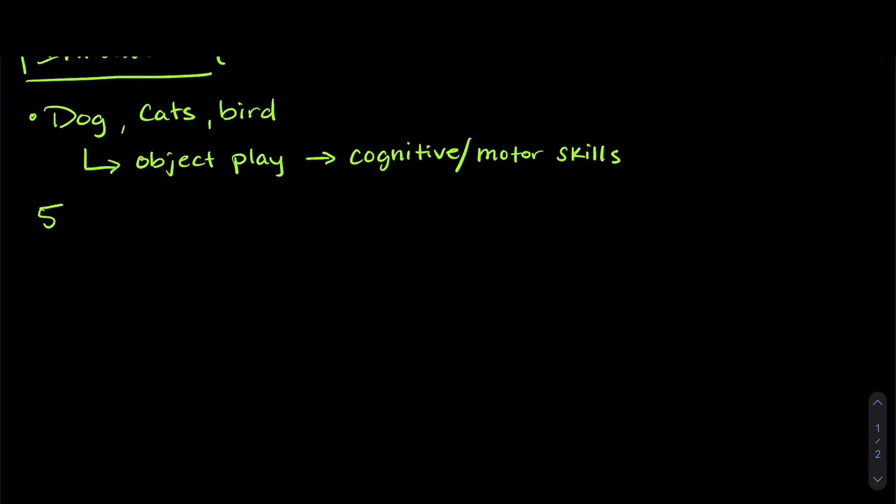And there are actually five rules of play to figure out if an animal or an organism is actually playing. So the first is that there's no purpose. The second is that it's free and natural.